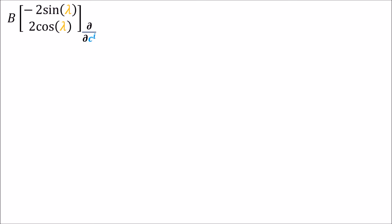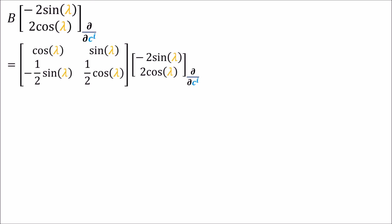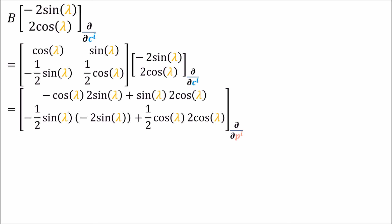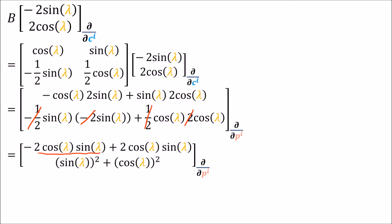Let's confirm that the backward matrix B transforms the Cartesian components correctly. We substitute the actual matrix and carry out the matrix multiplication. The negative one-half cancels with negative two, and the positive one-half cancels with positive two. In the first entry, a negative and positive version of the same term add to zero. In the second entry, we have sine squared plus cosine squared, which equals 1 by the well-known trig identity. So the polar vector components are 0 and 1, which is exactly what we calculated in the last video.